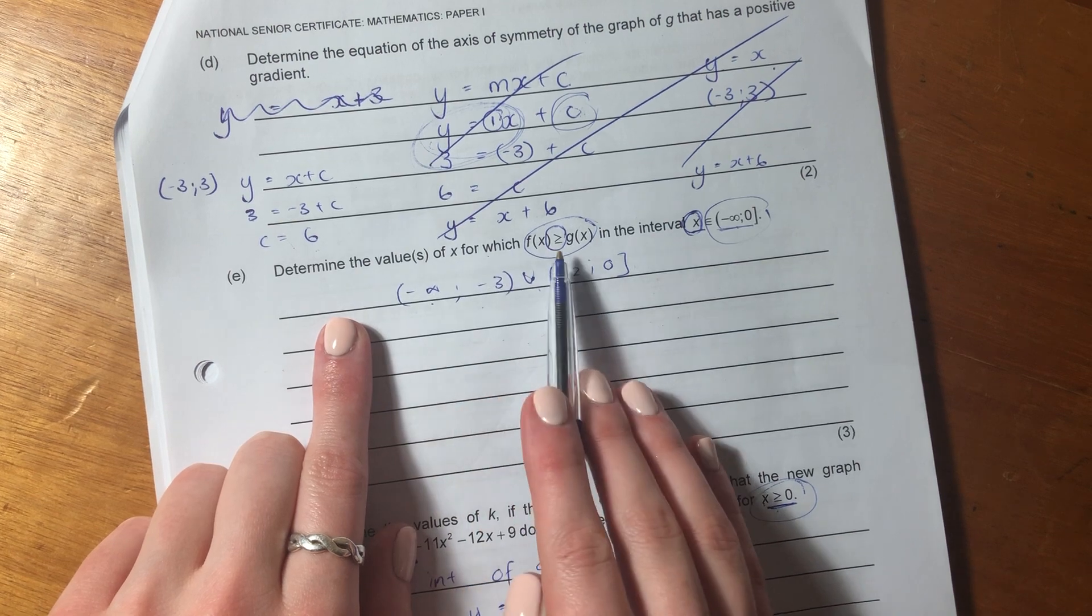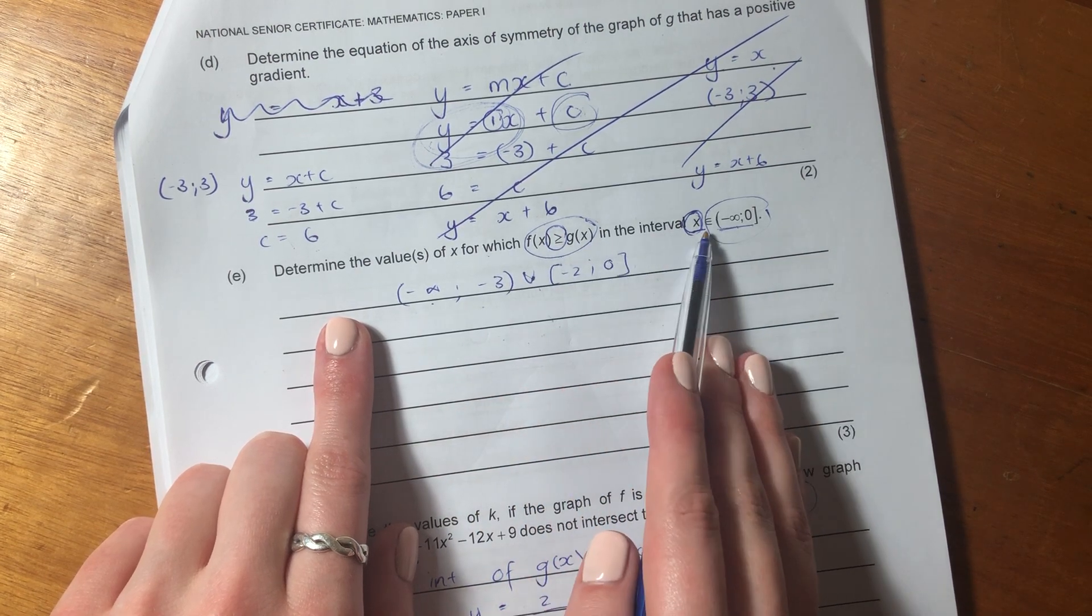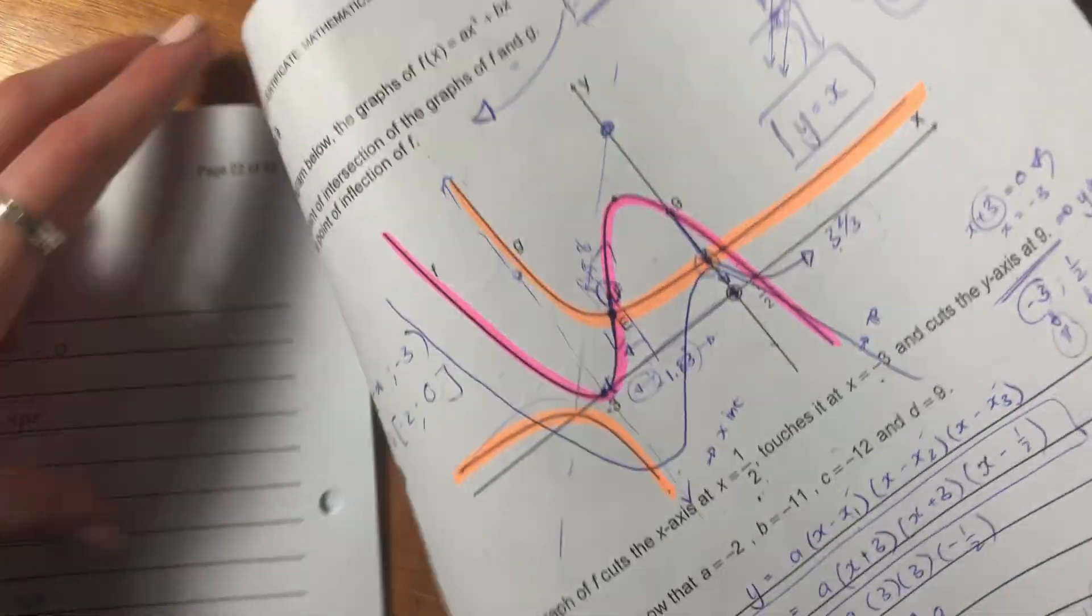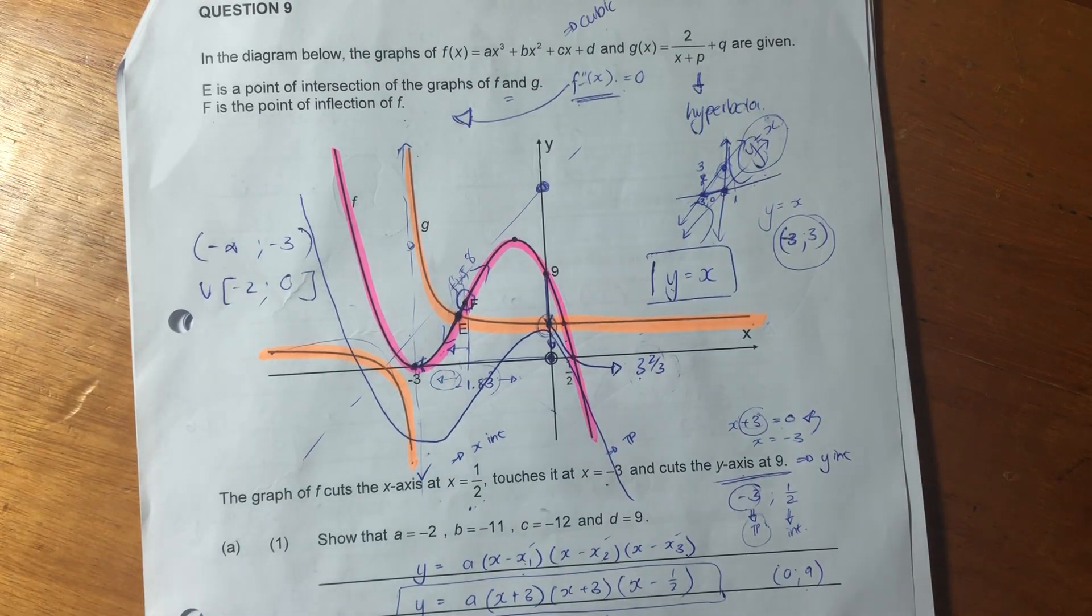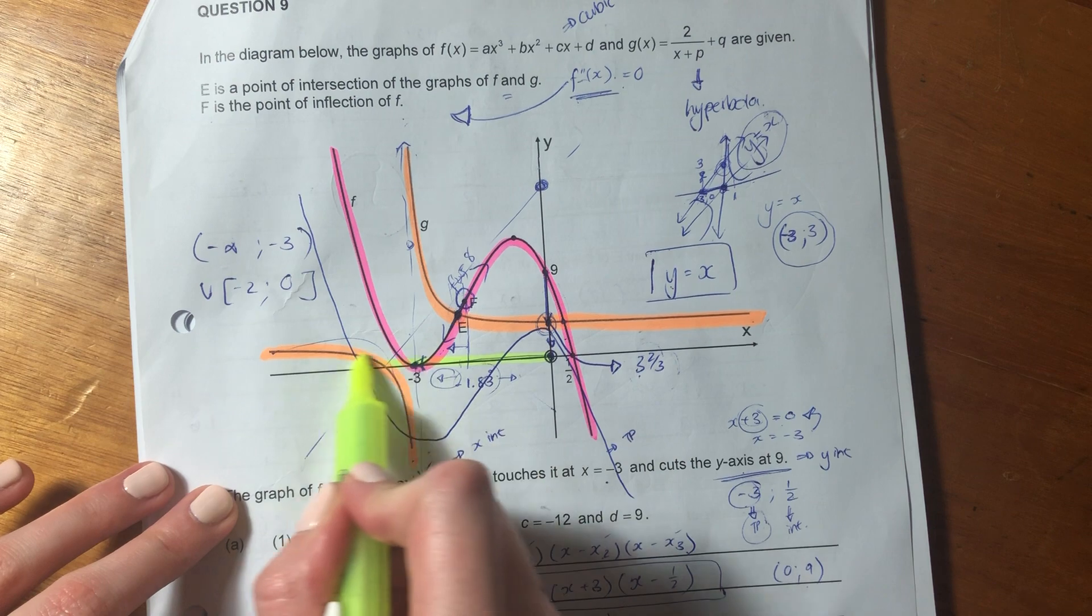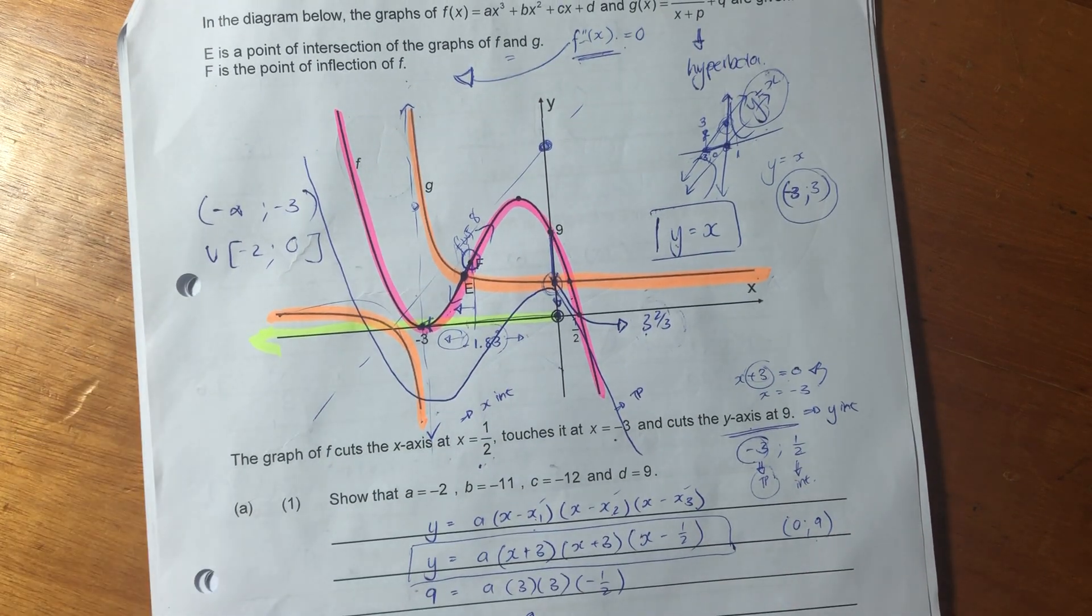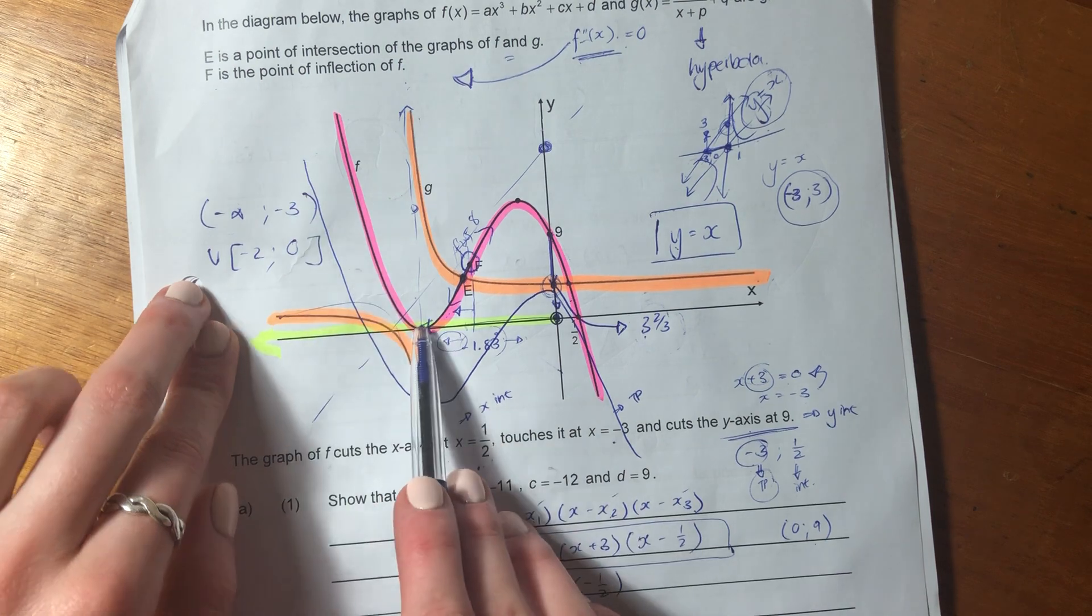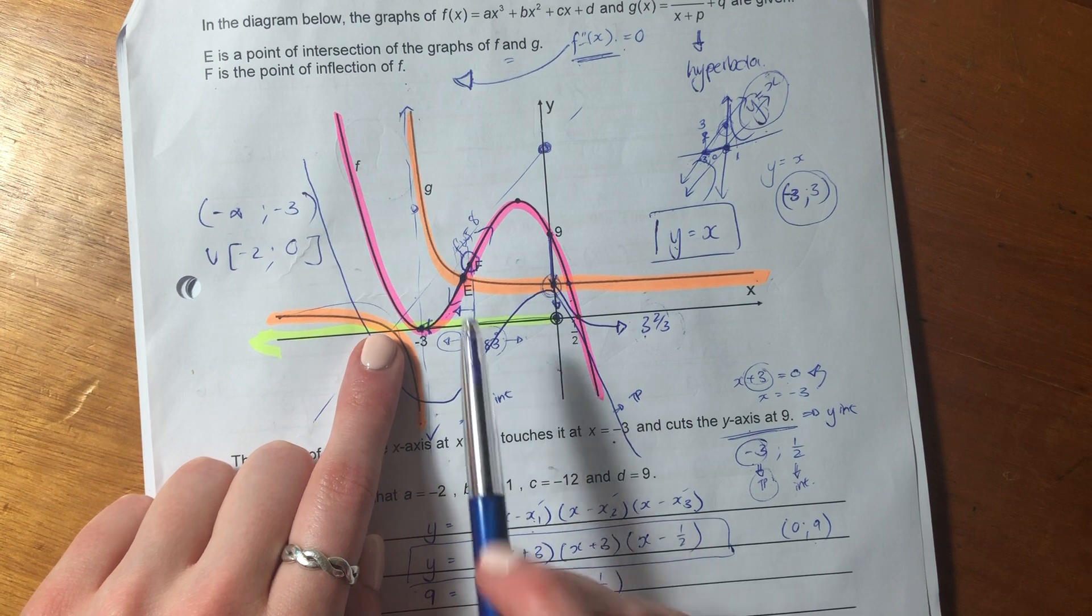Then it says here, determine the value of X for which F of X is greater than or equal to G of X in the interval negative infinity to zero. So what's important here is when we go back to this graph, we're only looking at X this side. And we're looking, basically, if you want to put it down to colors, where pink is above orange.